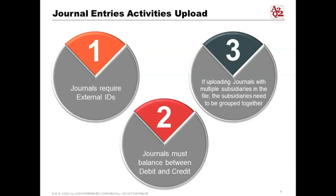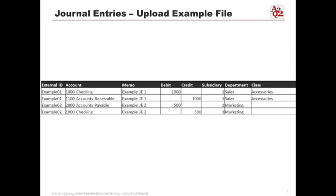If you're uploading journal entries with multiple subsidiaries, the entries for each subsidiary must be grouped together. For example, if you have a US parent, a UK subsidiary, and an Asia subsidiary, all UK journal entries should be grouped, all Asia entries grouped, and all parent entries grouped. If you don't do that correctly, the upload will be rejected.